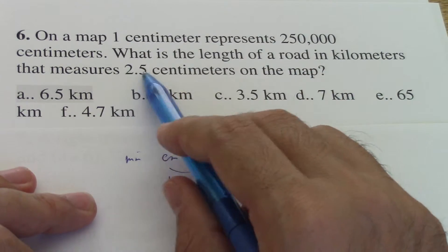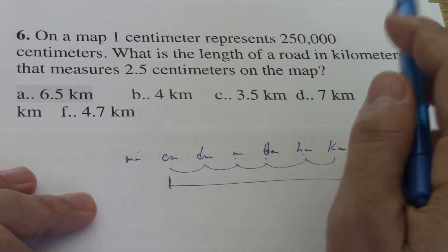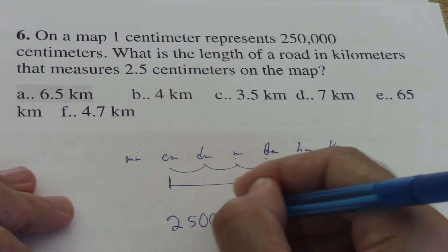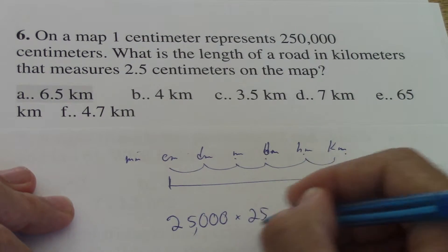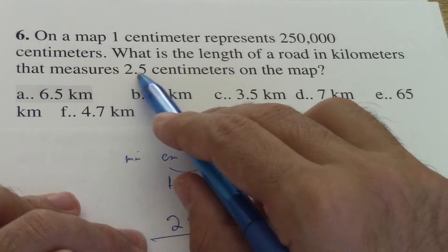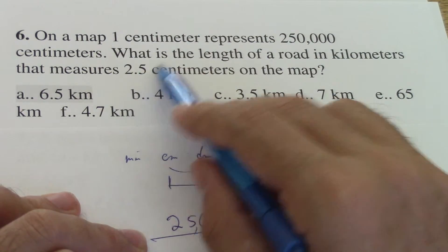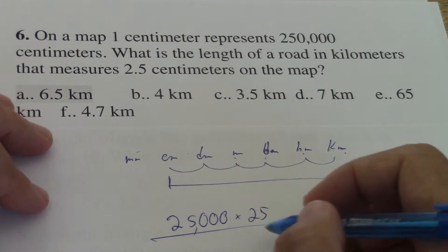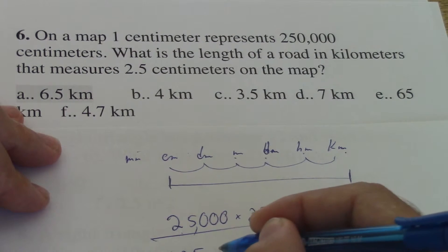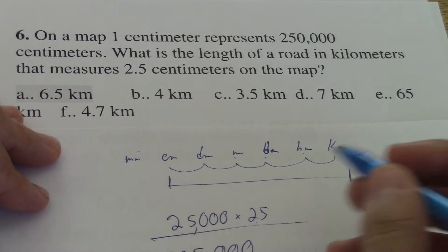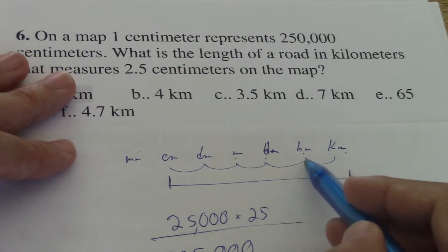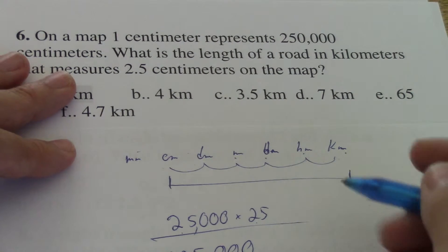Let's first multiply 2.5 times 250,000. So that would be the same as 250,000 times 25, because I just take off one zero from here, but I move one to the right here. So basically it's the same answer. So 25 times 25 is 625, and then I add those three zeros, because it's 10, 100,000, 10,000, 100,000.